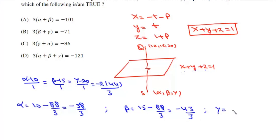And γ is 20 - 88/3 and it will be -28/3. So from here we can write 3α = -58, 3β = -43, and 3γ = -28.